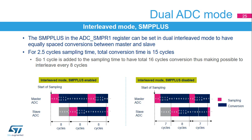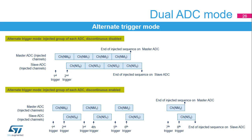The maximum number of samples per second is equal to 80 MHz divided by 8, equals 10 MHz per second. The alternate trigger mode converts an injected group of channels. Conversions are started only by using hardware triggers. The external trigger source comes from the injected group multiplexer of the master ADC. When discontinuous mode is disabled and the first trigger occurs, all injected master ADC channels in the group are converted. When the second trigger occurs, all injected slave ADC channels in the group are converted.